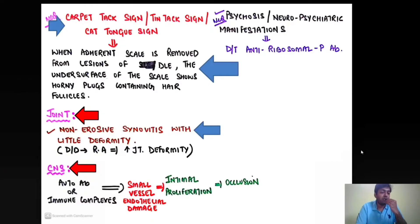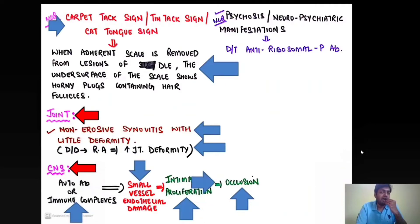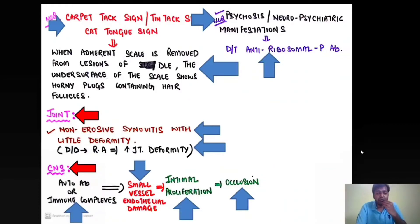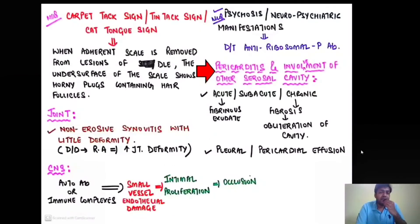At the level of the CNS, the auto-antibodies or immune complexes of SLE deposit in small vessels and lead to endothelial damage, inciting intimal proliferation and ultimately occlusion of blood vessels. The patient presents with psychosis or neuropsychiatric manifestations. This occurs due to the anti-ribosomal P antibody — a very important MCQ point.